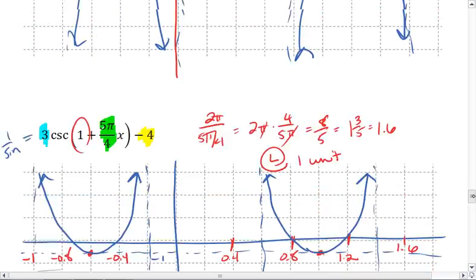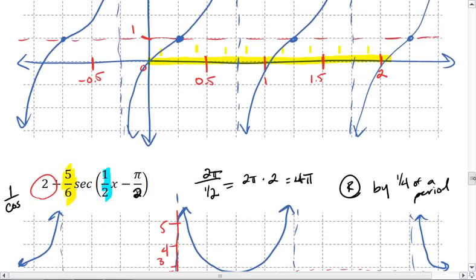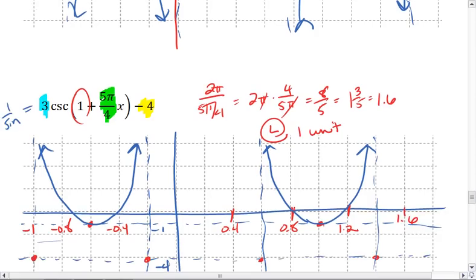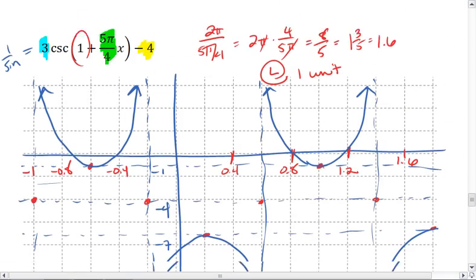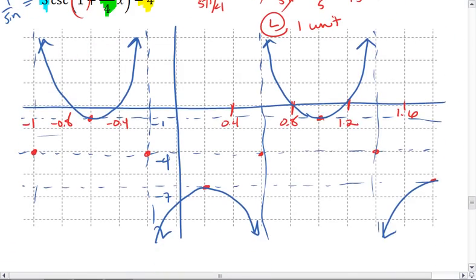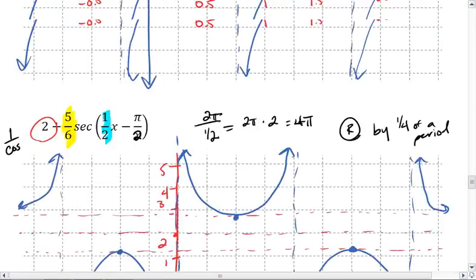So notice the big thing to remember is that secant goes with 1 over cosine and cosecant is 1 over sine. Graphing those cosine and sine graphs first will really help you when you're trying to graph cosecant and secant.